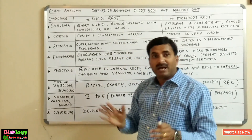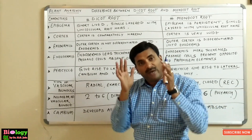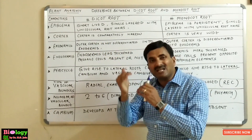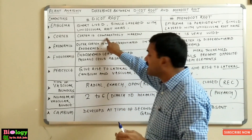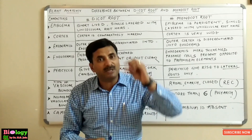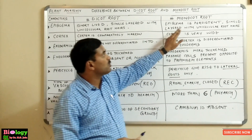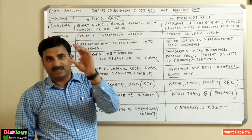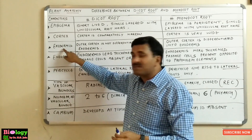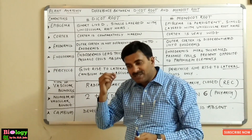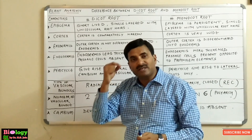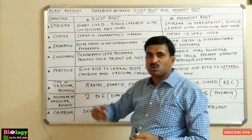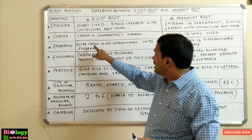In the dicot root, the cortex is comparatively narrow — not less developed, but narrower compared to the monocot root. In the monocot root, the cortex is very well defined and wide. Regarding exodermis: in some roots, the outer cortex becomes differentiated into a layer called exodermis.